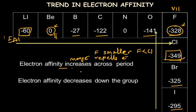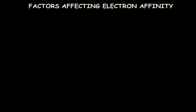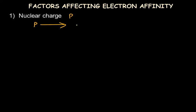The factors affecting electron affinity: the first factor is nuclear charge — that is, the number of protons. Across the period, the proton number increases, which increases the attraction for the outer electrons toward the nucleus. With a higher nuclear charge, the electron affinity value increases, which is why electron affinity increases across the period.